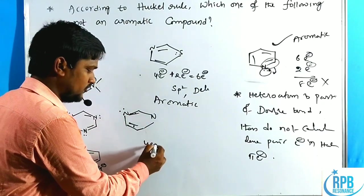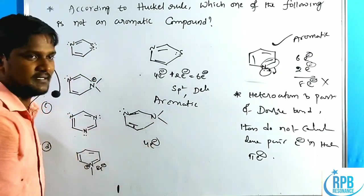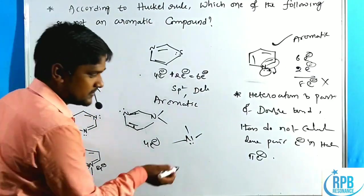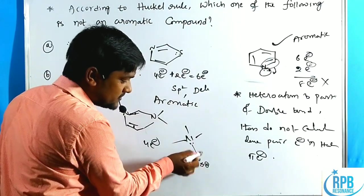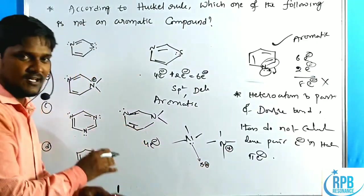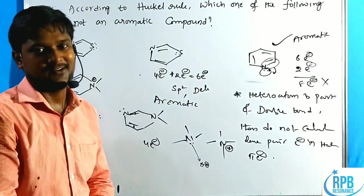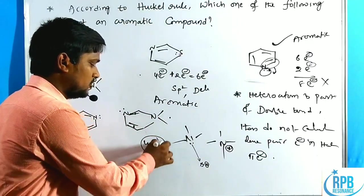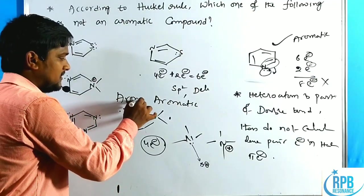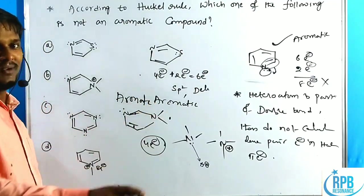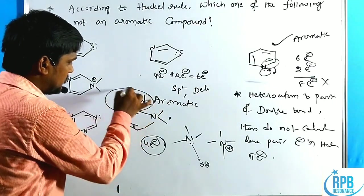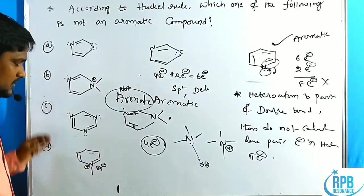In this compound, nitrogen has four bonds — it is in the form of a quaternary salt. In a quaternary nitrogen, there are no lone pair electrons remaining, since the lone pair was donated to form the coordinate bond. So we calculate only the pi-bonded electrons: only four electrons total. Four electrons corresponds to 4n (n=1) by Hückel's rule — this is not 4n+2. Therefore this compound is not aromatic. The question asks which is not aromatic, so this is a candidate answer.